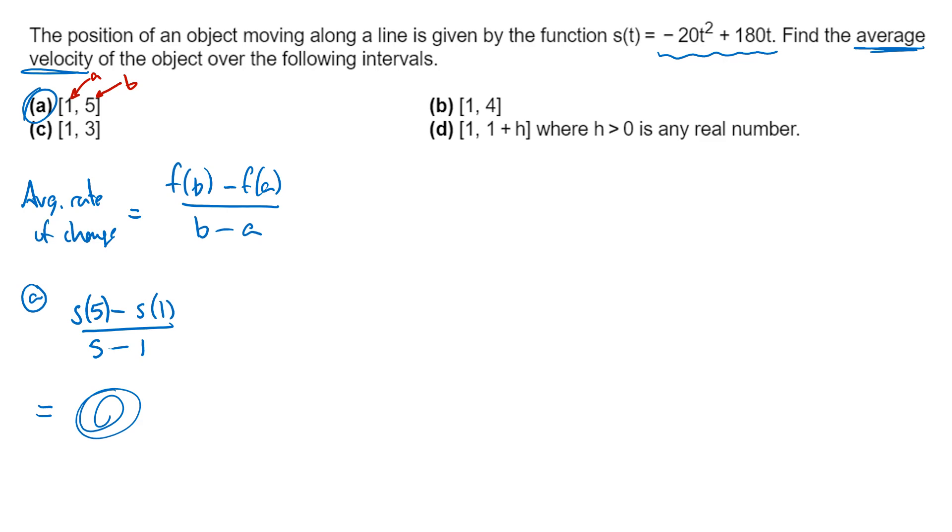The part that seems to be tripping people up is things that look like part d here. So that's the one I want to work through. So for part d, again, the two x values they give me are my a and my b. So the 1 here, that's a, and the 1 plus h, that's my b.